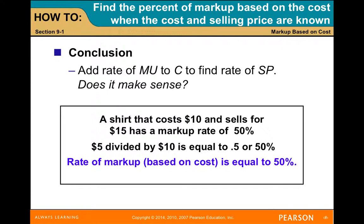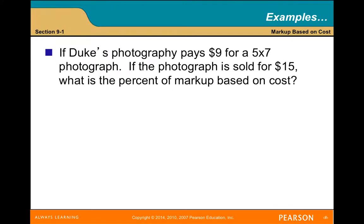A lot of times we're not going to know the cost on the wholesaler side — we just know the selling price, but they're always going to make money. If Duke's Photography pays $9 for a 5x7 photograph and it is sold for $15, what's the percent of the markup based on the cost? 66.7%.